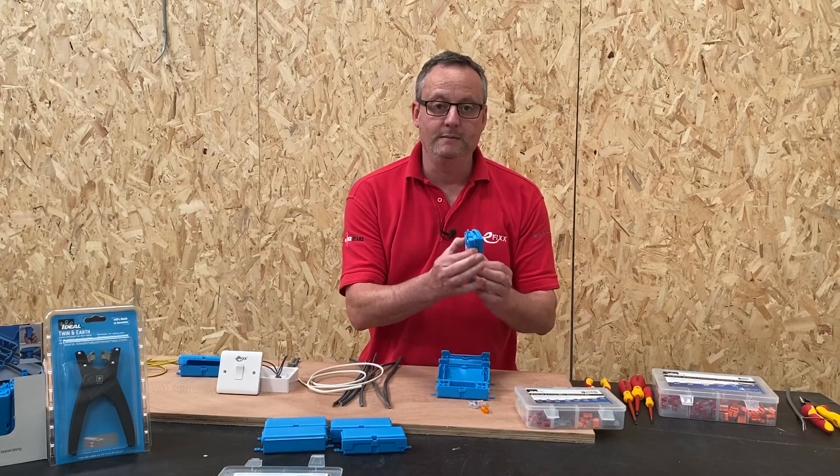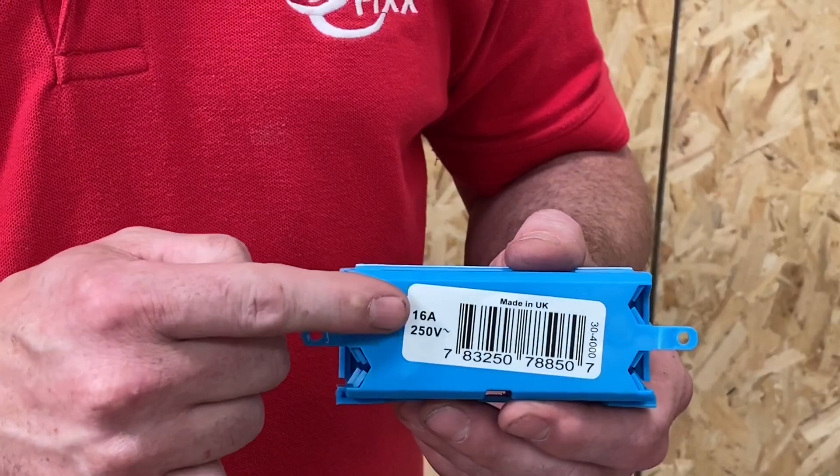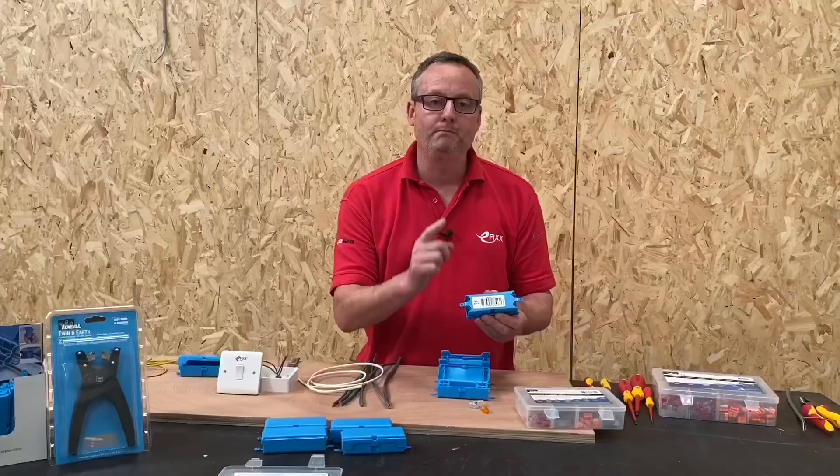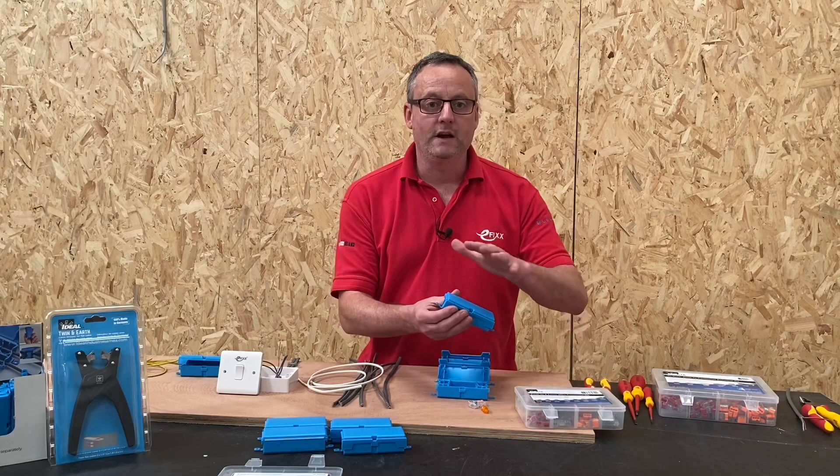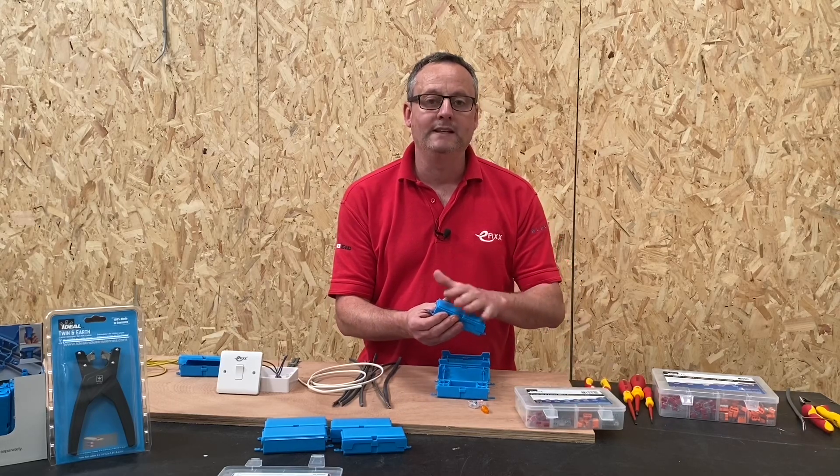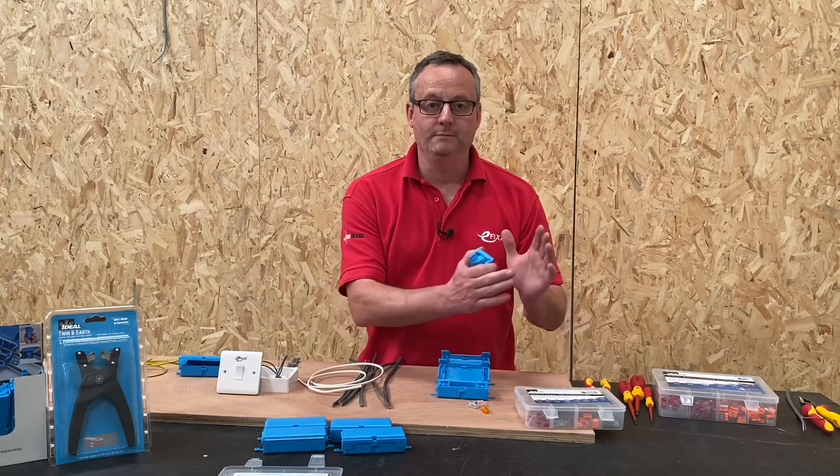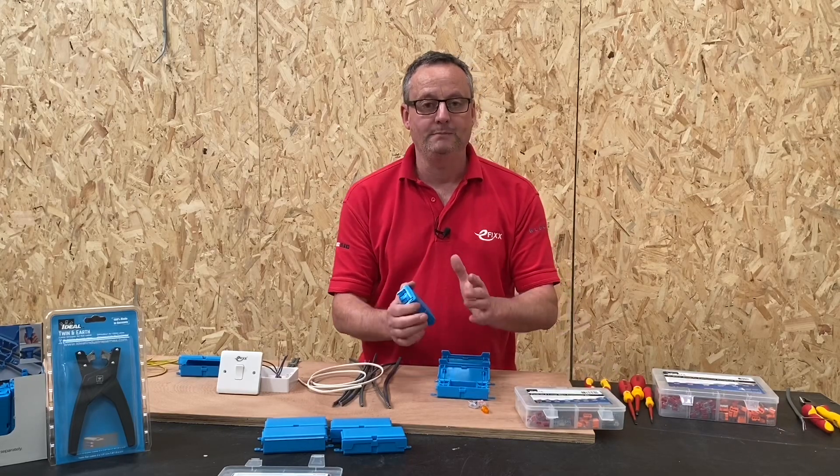It's designed to go through a 50 millimeter hole, and on the back it's rated at 16 amps. That's really important. It means whichever of the connectors we've just discussed we insert within this box, they are only rated at 16 amps.